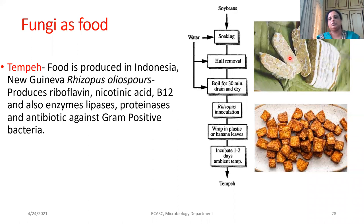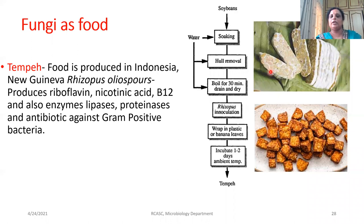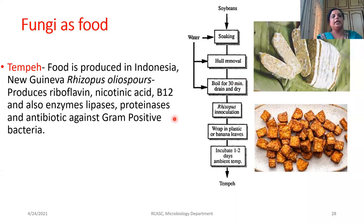Rhizopus grows vigorously, utilizing the starch and protein present in the soya bean to form a cake-like structure. After two to three days, you can open and cut it like bread — this is how it is marketed. This is called Tempe, and it has got a high nutritive value. Rhizopus oligosporus is one of the edible fungi.